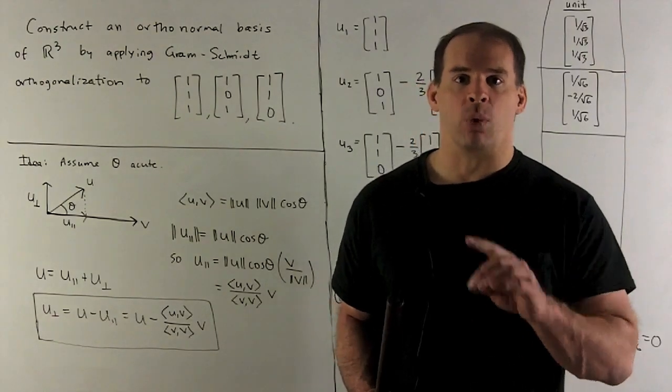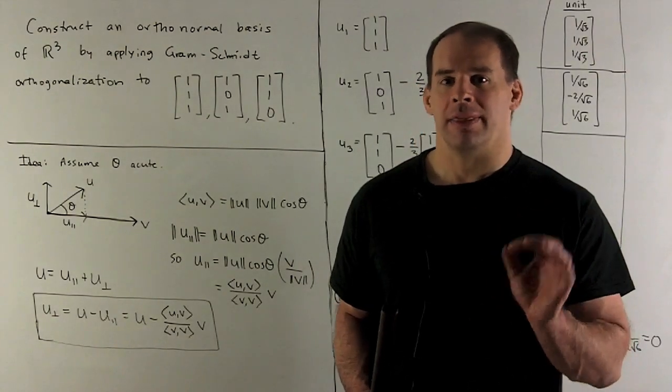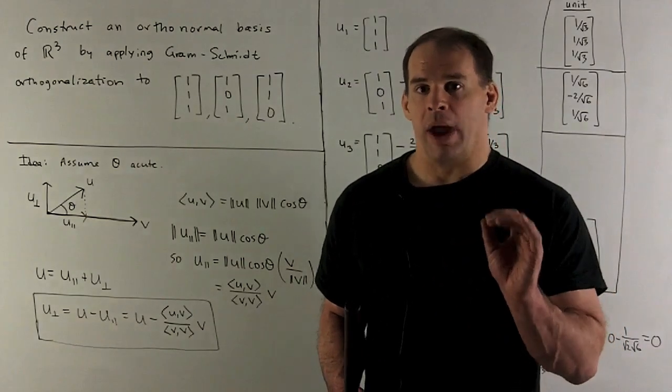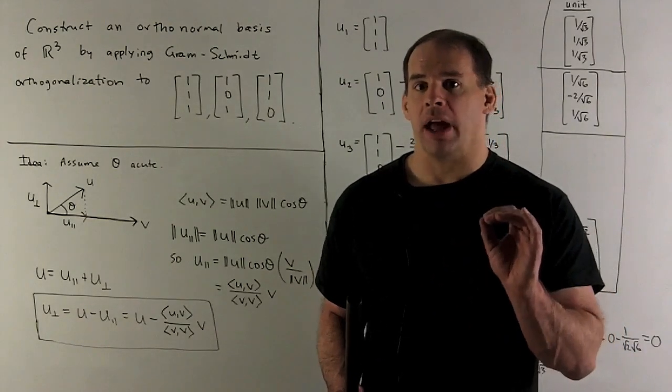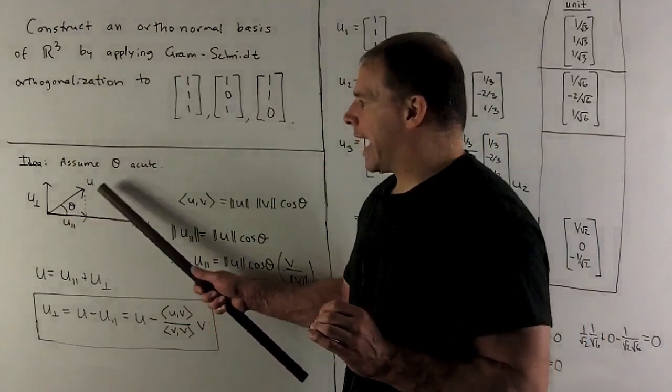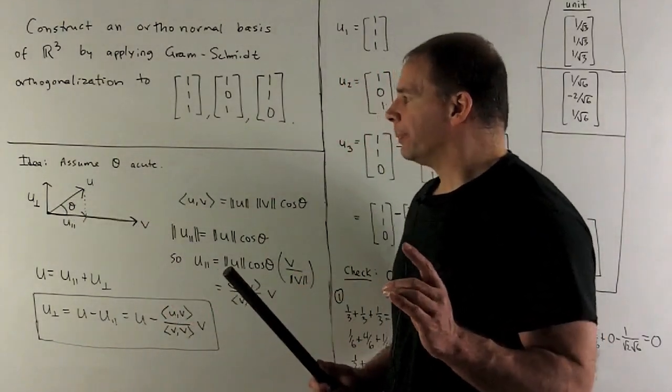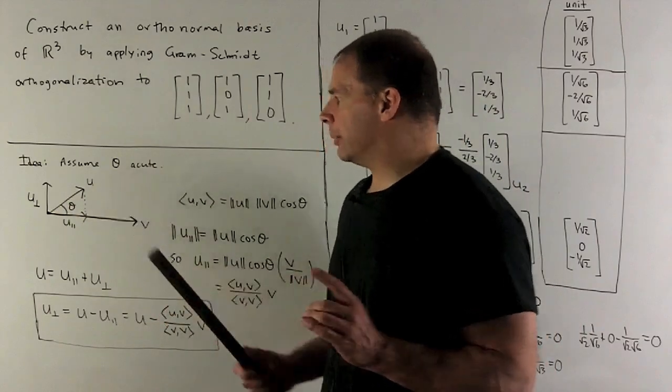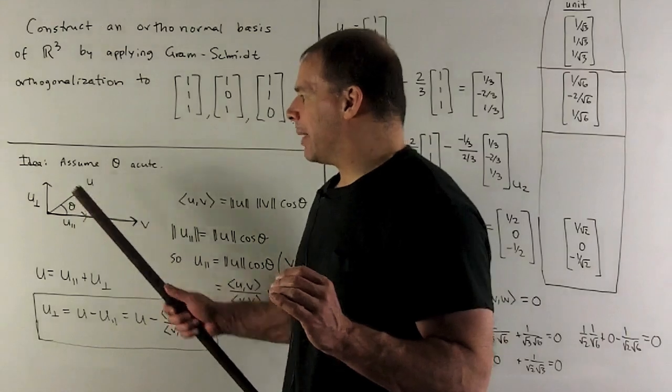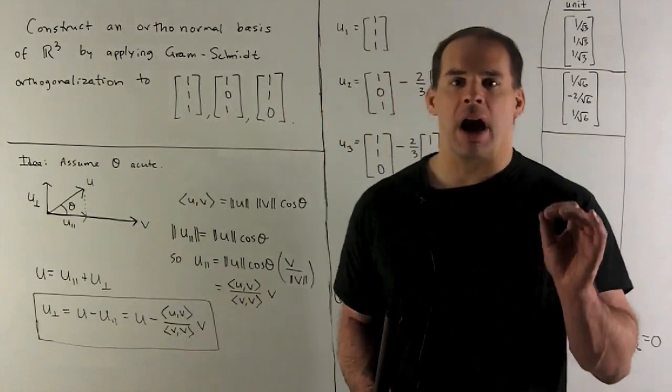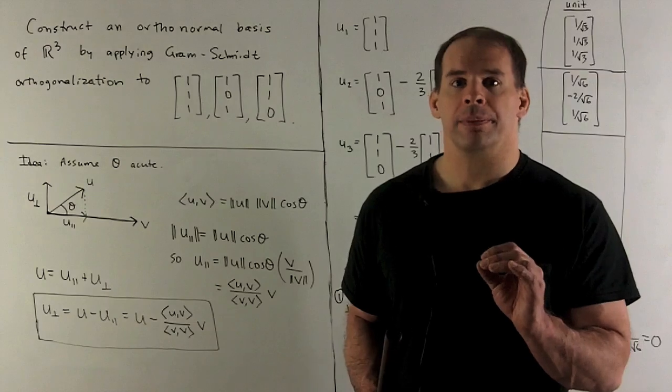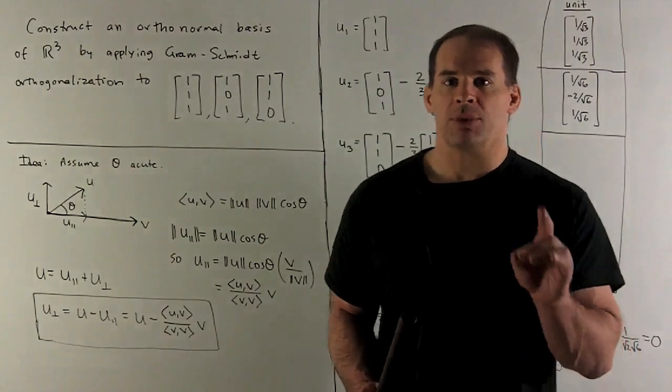If I can find a formula for u_parallel, then we have something we can work with with numbers. The way I get our formula for u_parallel, if you note, if I take a look at what we have with the right triangle, the hypotenuse is going to be the length of u. So if I consider theta and the hypotenuse, then the length of u_parallel is the length of u times cosine theta.